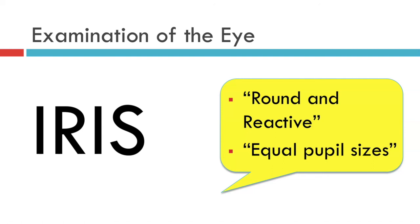That concludes the examination of the structure of the iris but not the function of the iris. By contrast, if you are performing a neurological examination looking at the function of the optic nerve, then you do need to look at the reaction of the pupils to a bright beam of light. That is covered in a different video on neuro-ophthalmology examination, and a link will be posted at the end of this video.